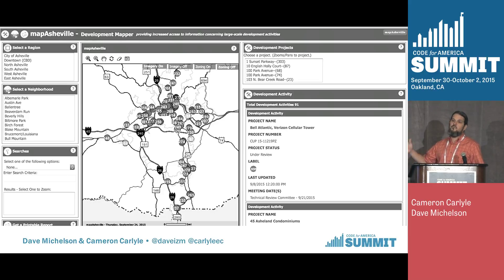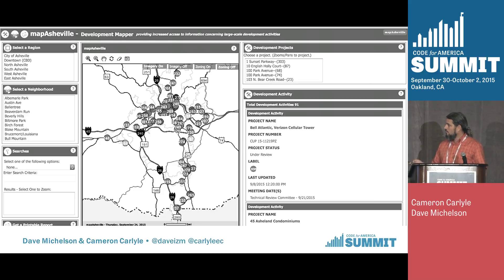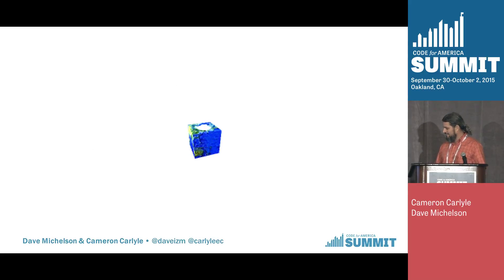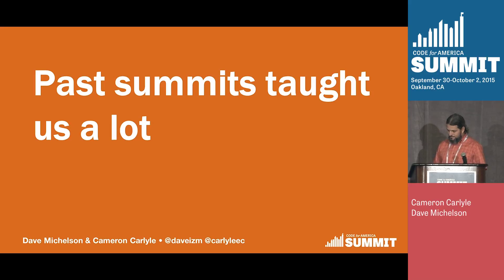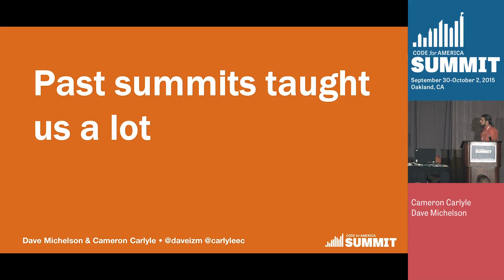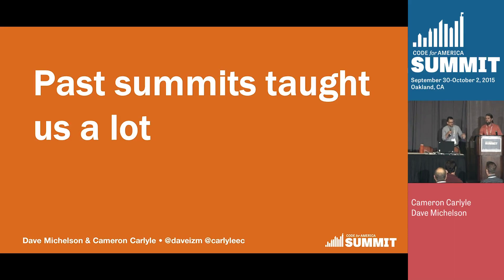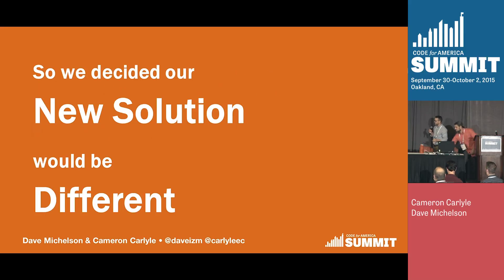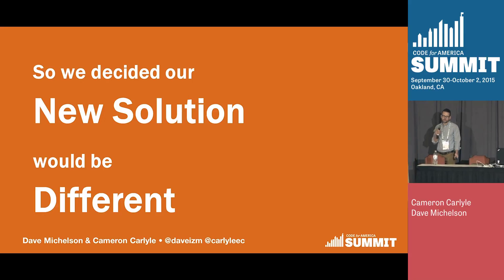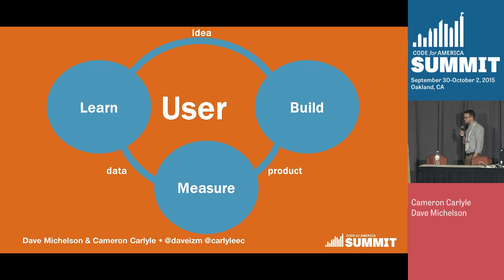We had this whole suite of applications we called Map Asheville. We'd actually won awards for them in 2006 — for example, a development mapper focused on one particular topic, which was different from other GIS departments. But instead of building on that customer focus, we continued their frustration. Everywhere they went they would see that spinning globe, and we definitely heard about it. We learned a lot from summits, so I'm going to turn it over to Cameron.